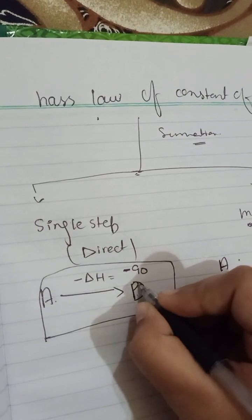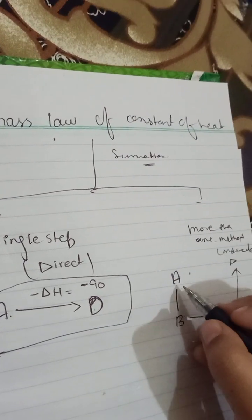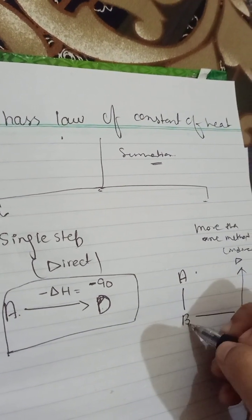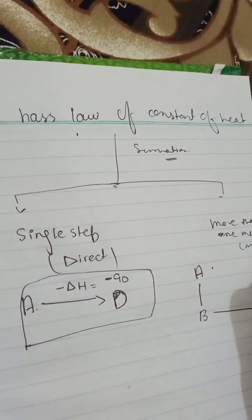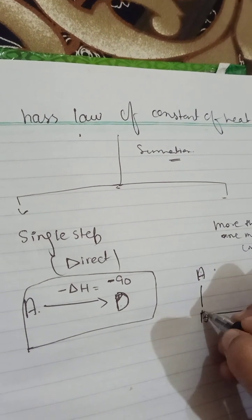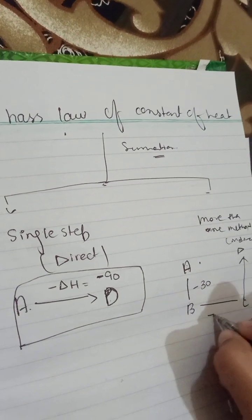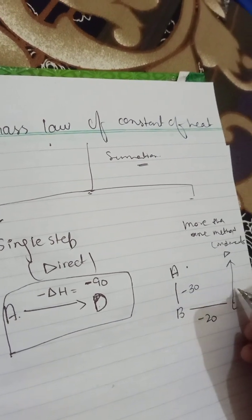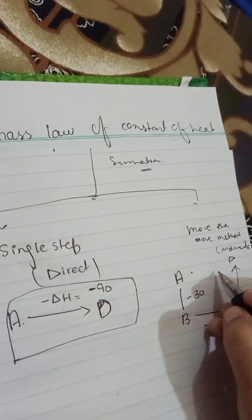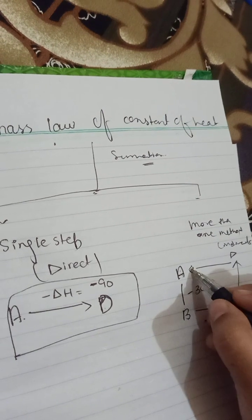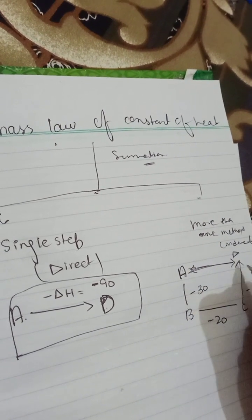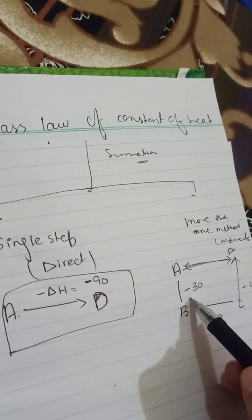For example, A is entirely converted to D, but in this reaction A will come into B, B will come into C, C will convert into D. So when A to B it releases minus 30, B to C minus 20 heat, C to D minus 40, and then it converts to D.